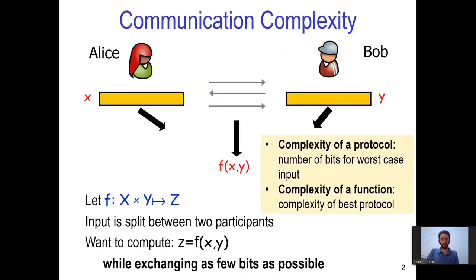Recall communication complexity, where the input is split between Alice and Bob, who have to compute some target function with as little communication as possible.